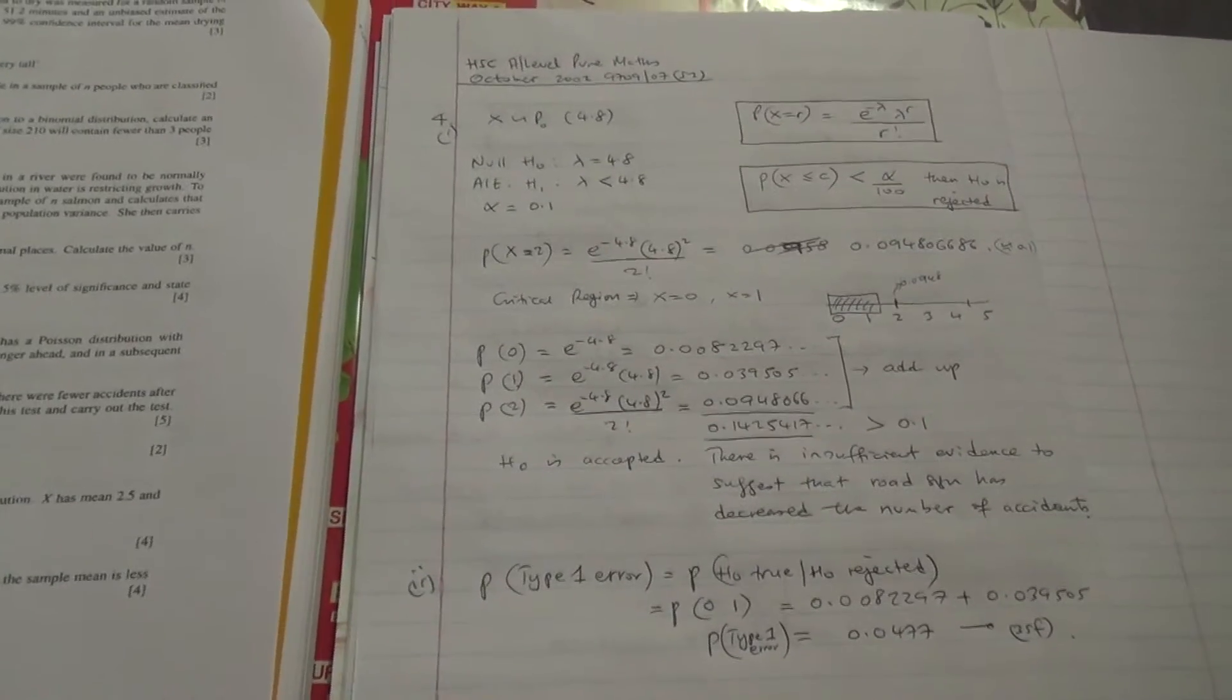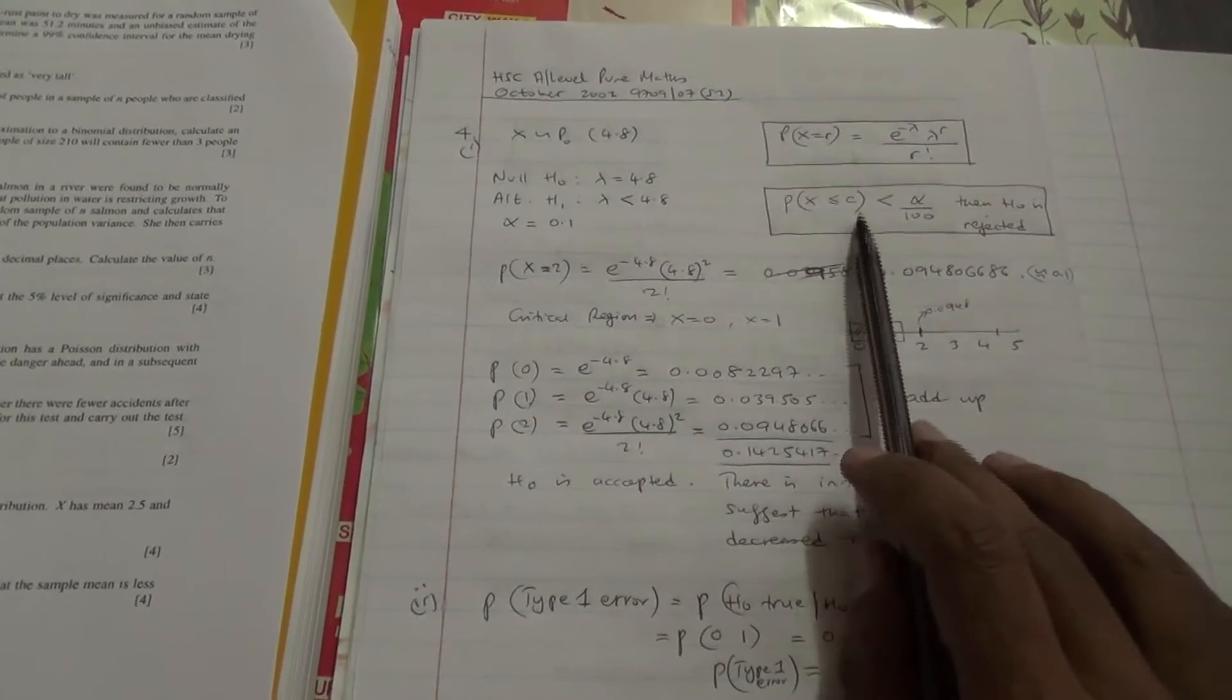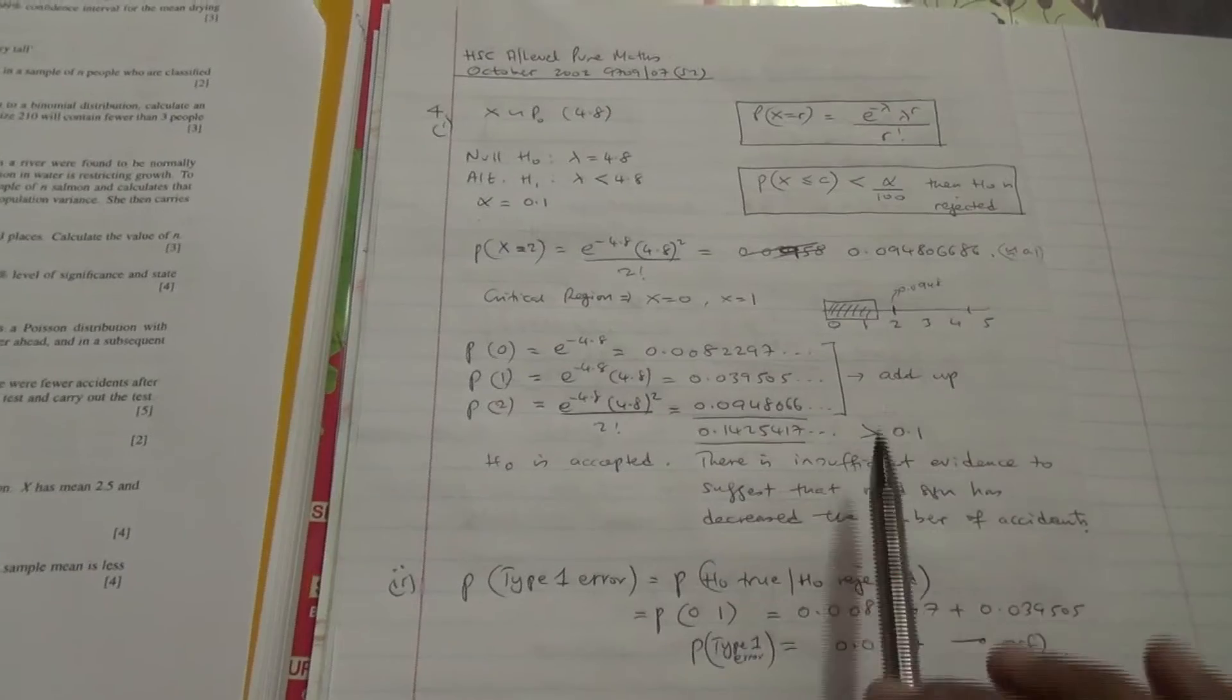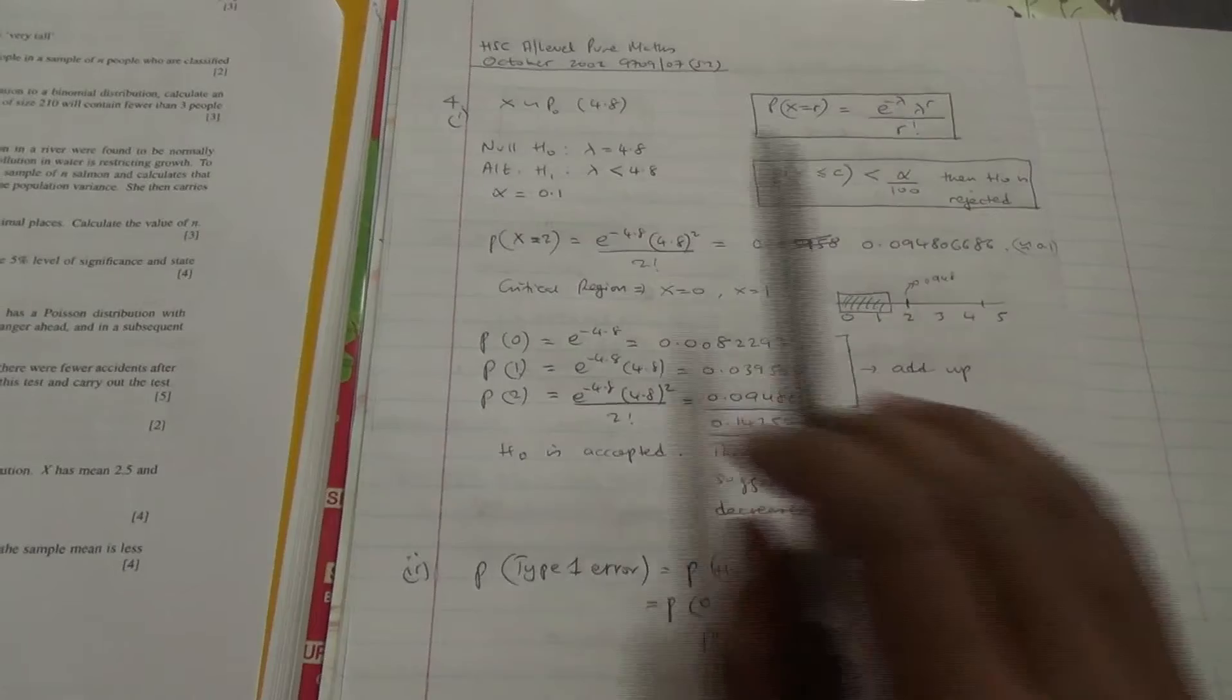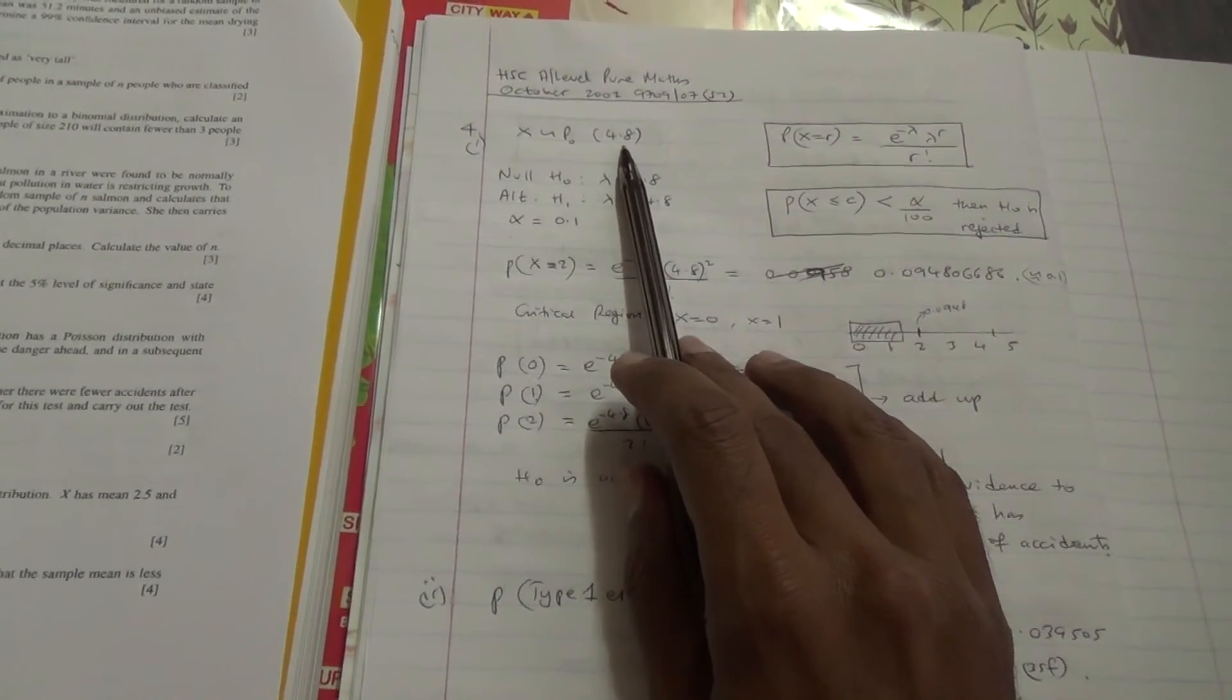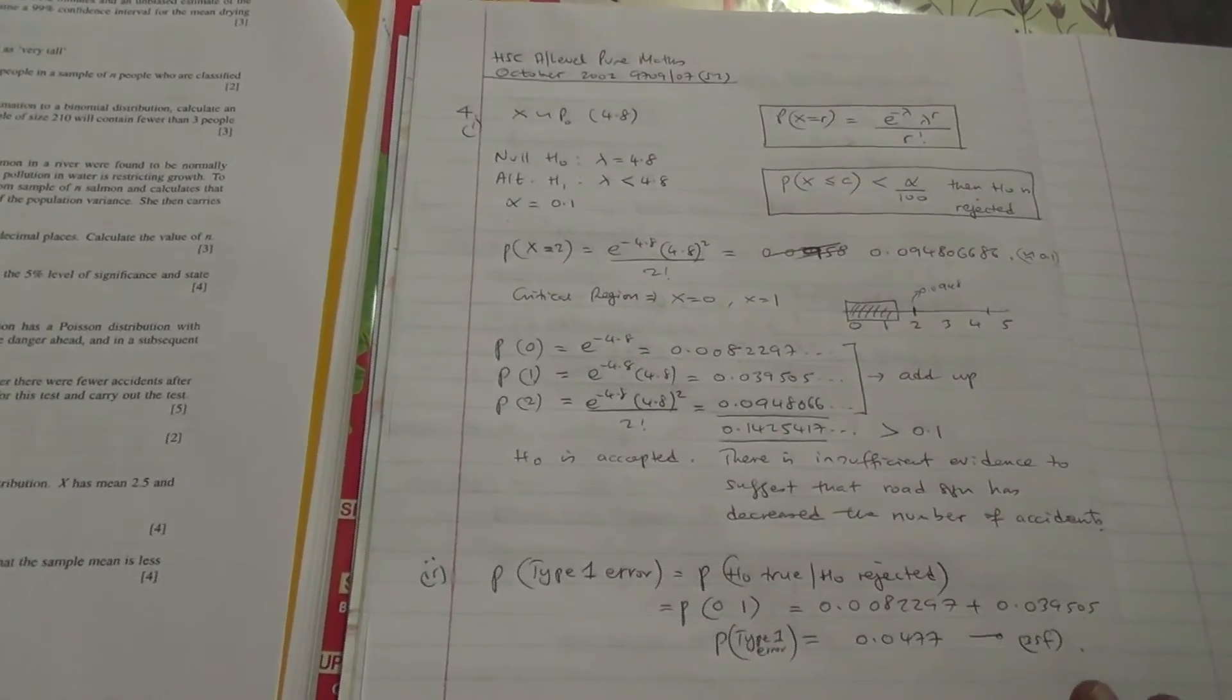Here we are for this question. I hope I didn't go very fast with this, because this part here, H0 being accepted, it all depends on this formula. If it is less than the significant level, then H0 is rejected. But in our problem, it is greater than 0.1. Therefore, we accept H0. So we accept that there is 4.8 accidents happening every month, and there has not been any reduction. There is insufficient evidence.